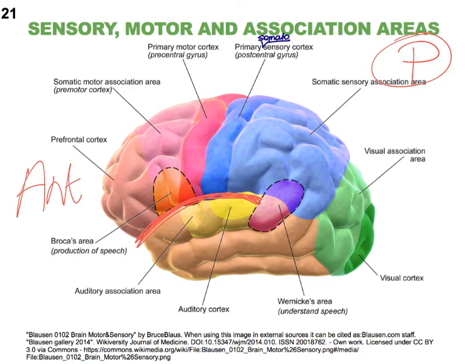In the occipital lobe, action potentials arrive from the eye — light signals are sent into that occipital lobe by the optic nerve. The visual association area then makes sense of that information, so that you understand what you're looking at. There's a difference between being able to see and being able to interpret what you see — that's what association areas do.